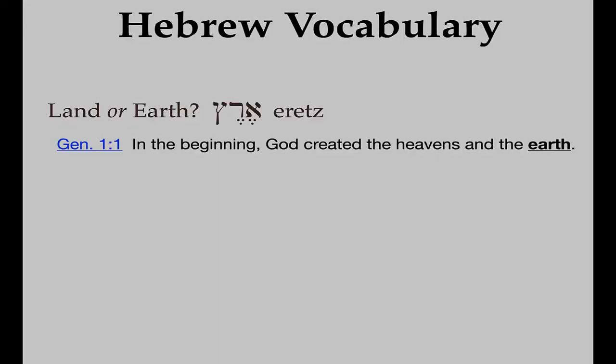Now let's look at Hebrew vocabulary, where Hebrew really helps. We'll look at some vocabulary related to common translations in English. The first is Genesis 1:1 — 'In the beginning, God created the heavens and the earth.' If you look carefully at the word 'earth,' it's Eretz. But Eretz doesn't mean earth the way we know it today — it doesn't mean planet earth. It simply means land. A modern reader would read 'earth' and think of the planet, but really it just says: God created the heavens or sky, and the land I see around me that I'm standing on.